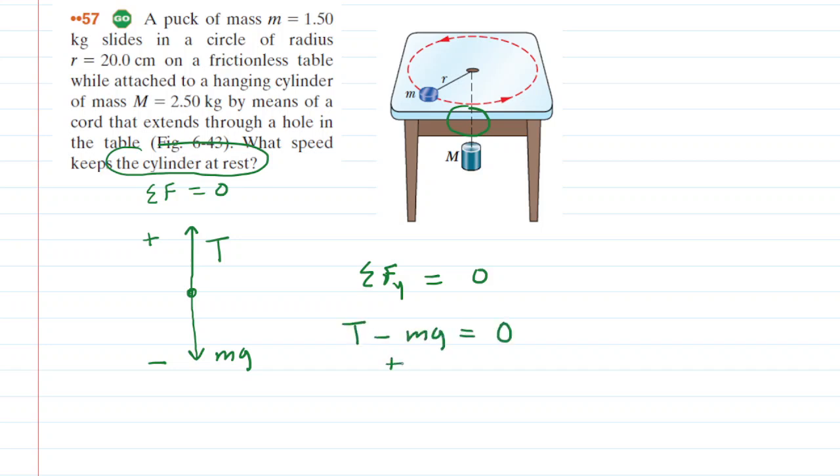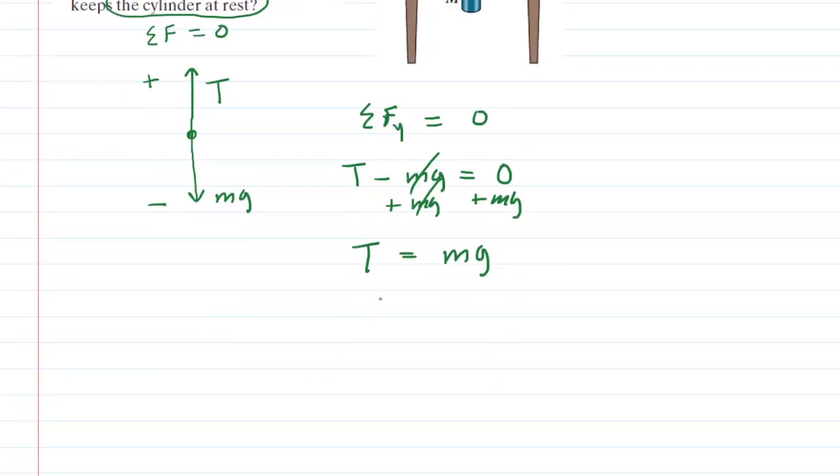We can add mg to both sides of this equation, so it cancels on the left side. Now we have an expression to help us calculate the tension in that string. The mass of the cylinder was given as 2.5 kilograms. Let's plug in the mass as well as 9.8 for g. When we simplify this, we get a tension of 24.5 newtons.